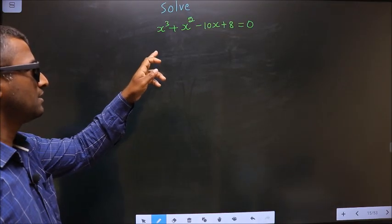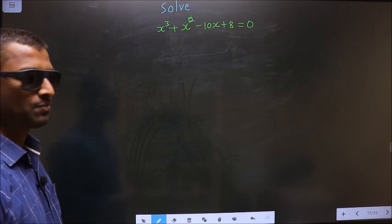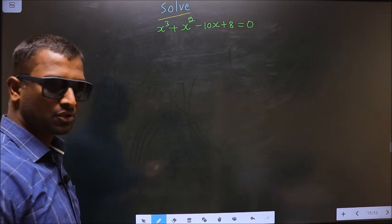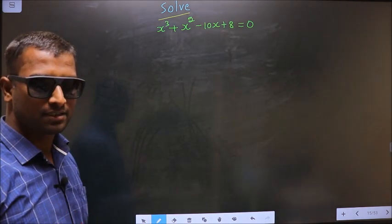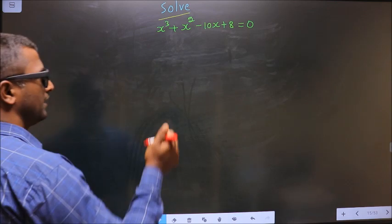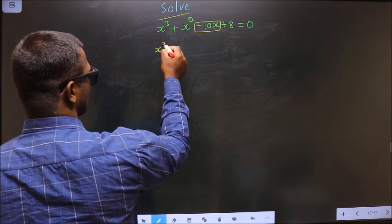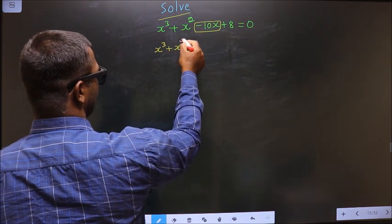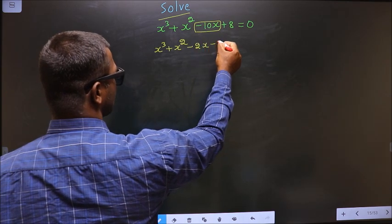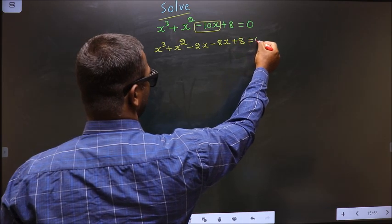Solve x cube plus x square minus 8x plus 8 equal to 0. Here they told you to solve, so you should find the values for x. For that, you should change the x term. So in place of minus 8x, now I write minus 2x minus 8x, plus 8 equal to 0.